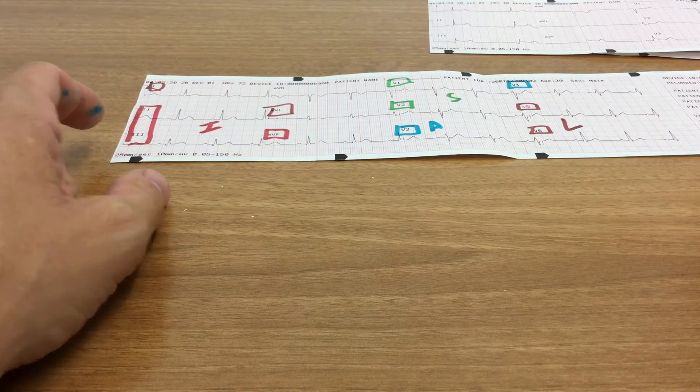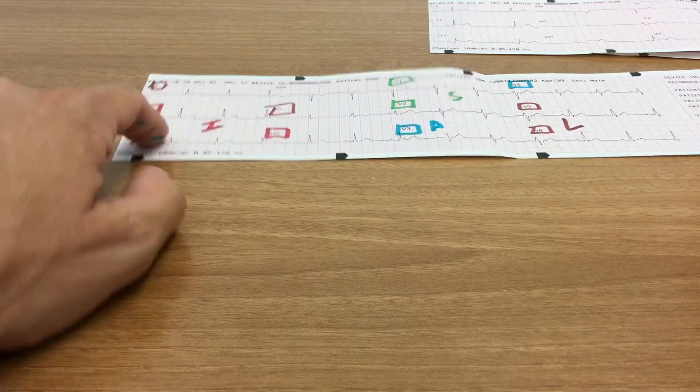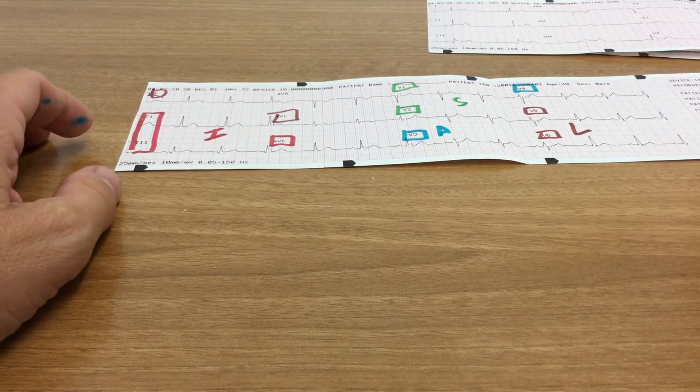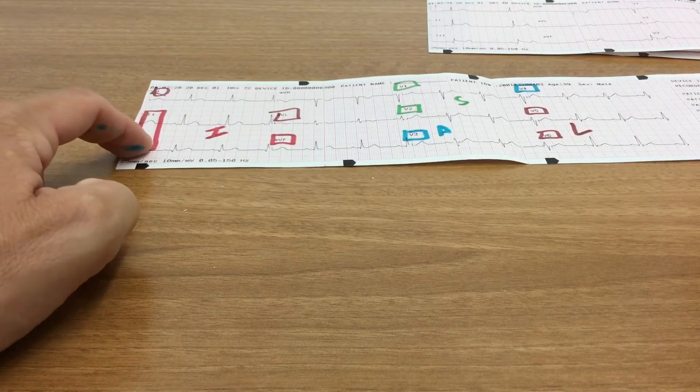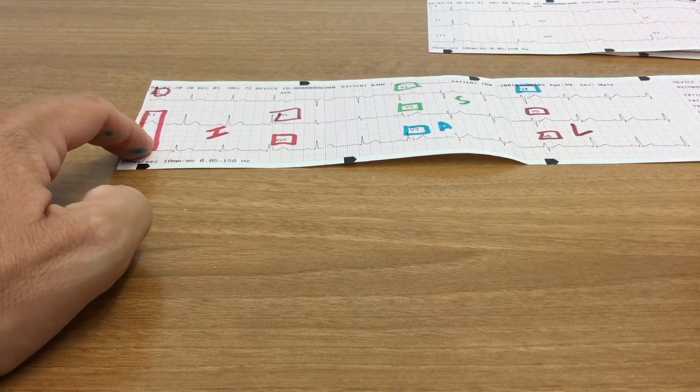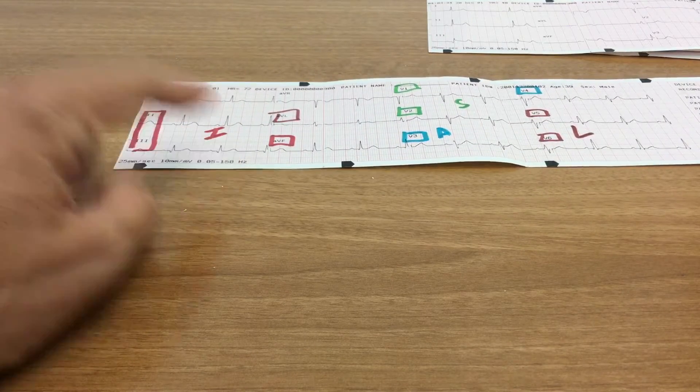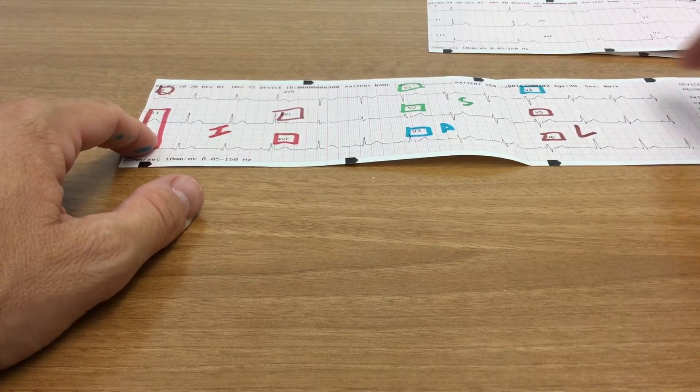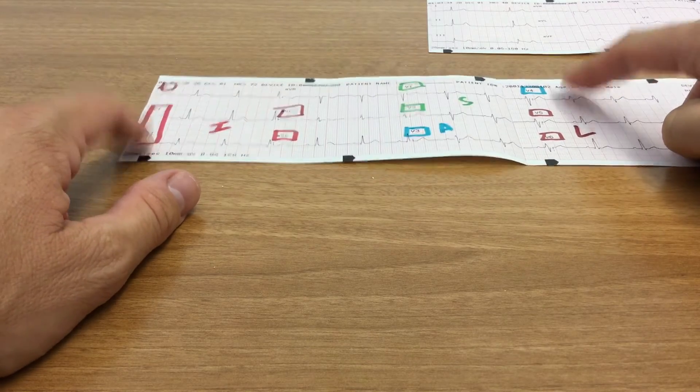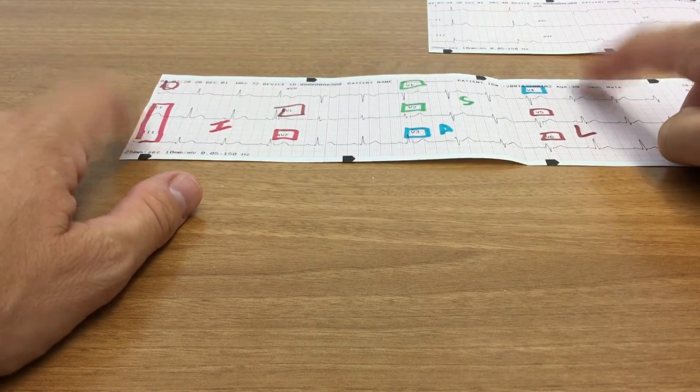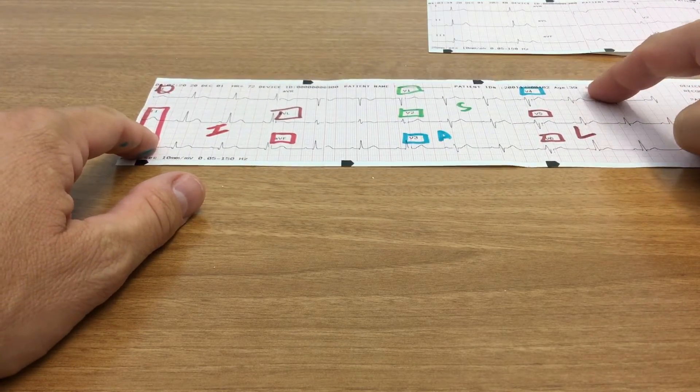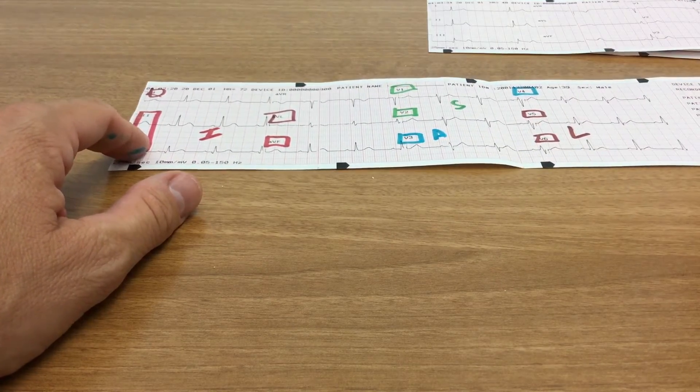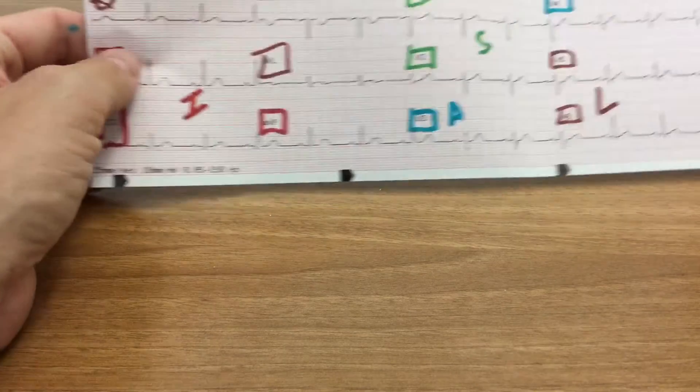So what I mean by contiguous leads are leads that are in a group. So if I have one millimeter of ST elevation in two and three, that is indicative of a STEMI in the inferior wall. If I only had a millimeter of ST segment elevation in three and then a millimeter in V4, these are not contiguous groups. And so that would not support the hypothesis of a STEMI occurring in my patient based on this evidence alone.